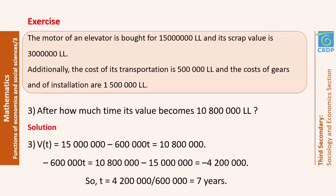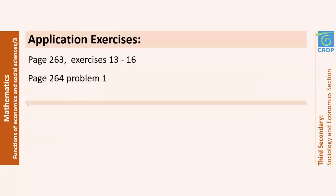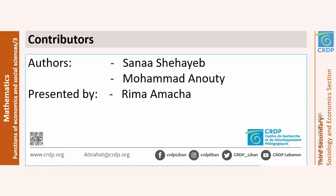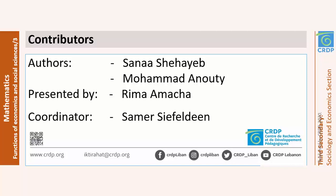This was an exercise about the depreciation of an asset. There are different types of depreciation you can calculate. This was the last exercise for this session. To do more practice on this chapter, refer to your textbook pages 263 and 264 — exercises 13 to 16 on page 263 and problem number one on page 264. Thank you so much for your attention, and stay safe.